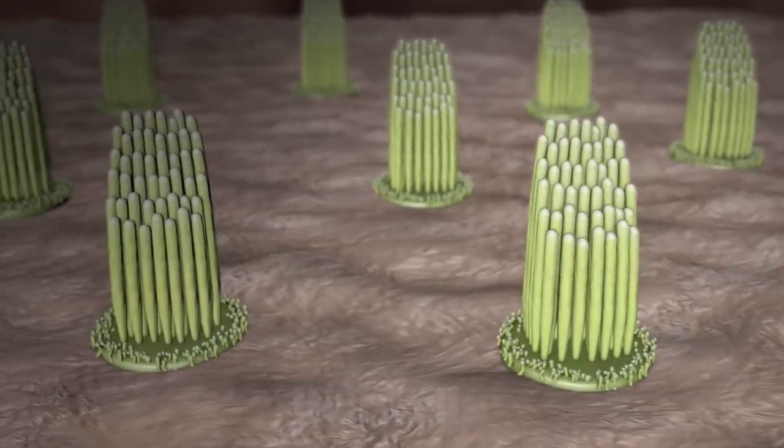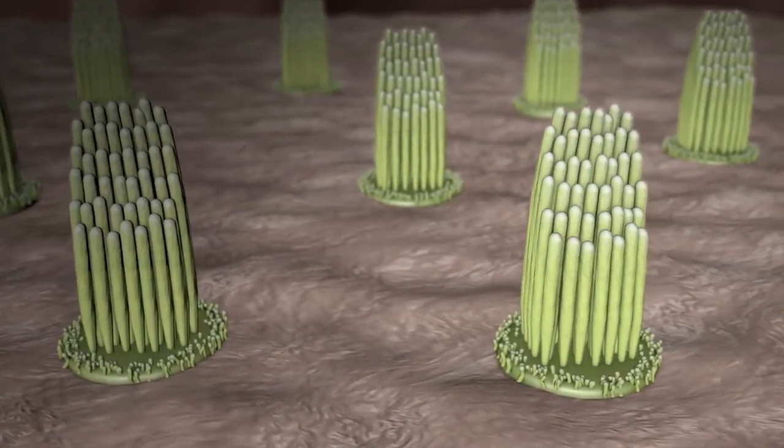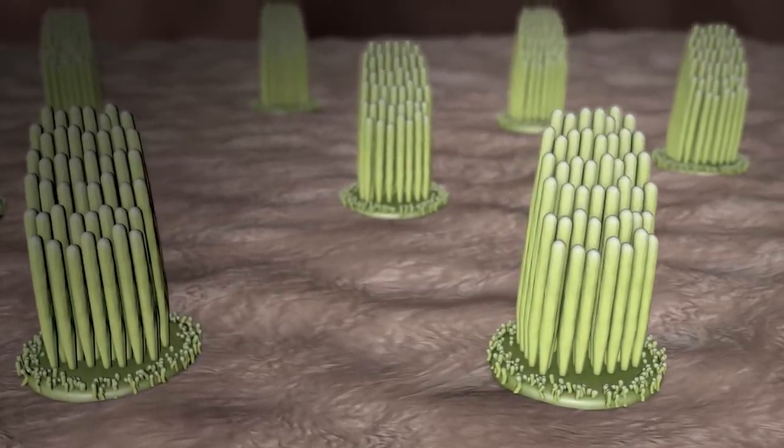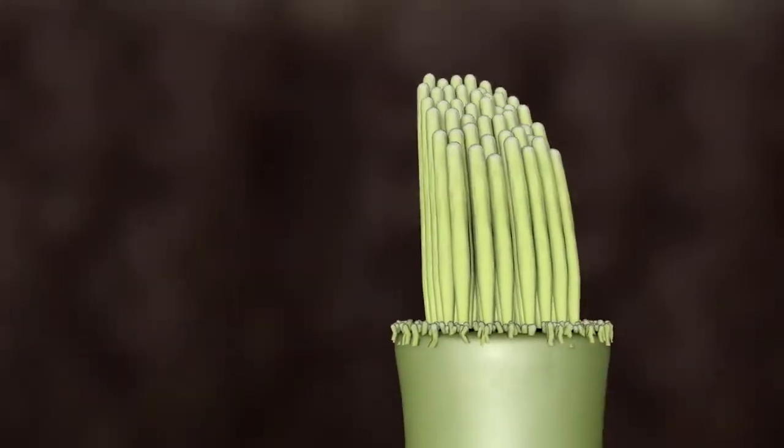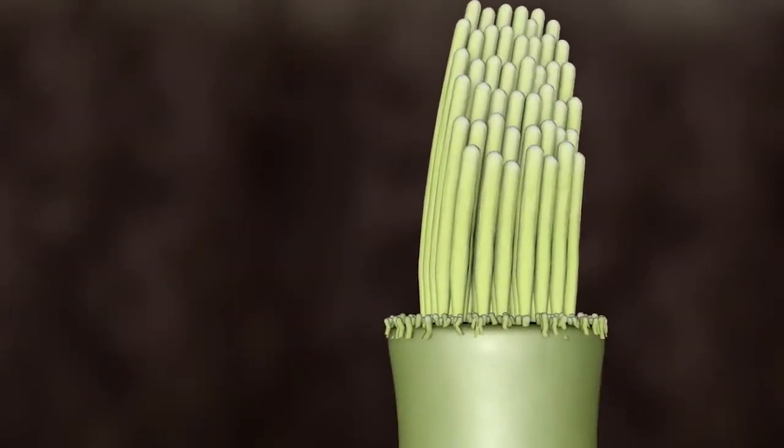The hair cells inside the cochlea ride these waves, and the hair bundles are moved. The hair bundle on top of the hair cell turns these movements into electrical signals.